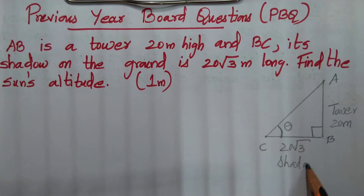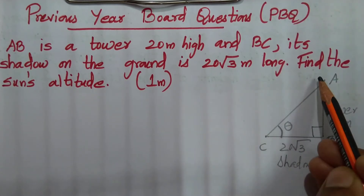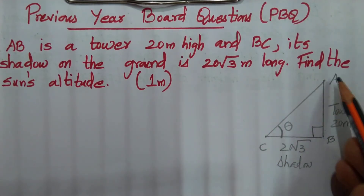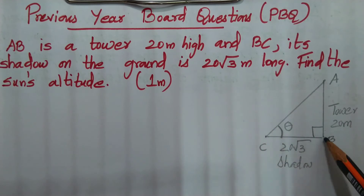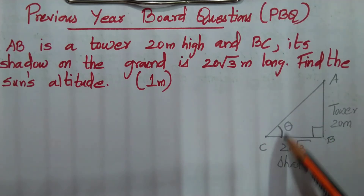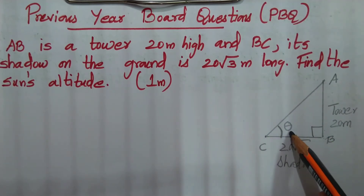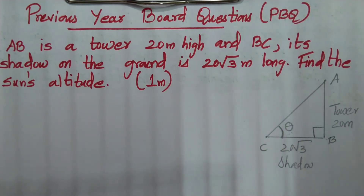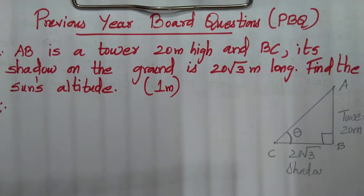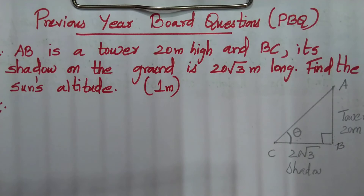The tip of the shadow connects to the top of the building. Mark the line of sight — the line of sight is from the tip of the shadow to the top of the tower. The head of this angle is the sun's altitude, which is the sun's inclination or angle of elevation. So I have to find this theta, the sun's altitude.